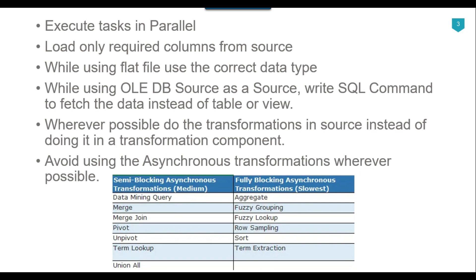Sometimes, for example when using merge transformations, we have to use the sort transformation and have no other choice. For semi-blocking asynchronous transformations like merge join, try to do the join in the SQL query instead. If one source is a SQL Server query and another is a CSV file, try importing the CSV into a SQL Server table and then doing the join in a SQL query with indexes on the joining columns. Test both options and use whichever is faster.